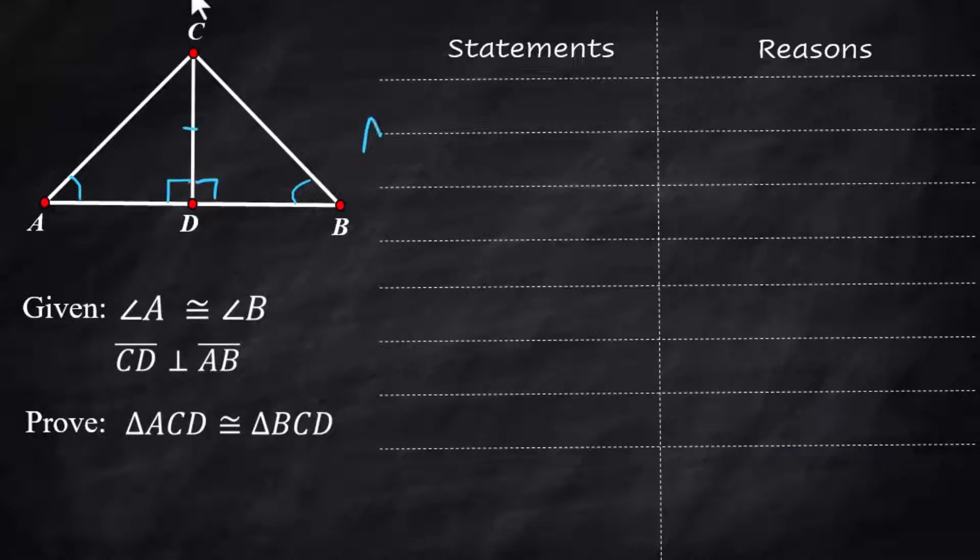Angle A is congruent to angle B, and that is given. So I've got one angle already set up. Now to get at the other angle, which are the two 90-degree ones, this is going to take a couple of steps. We start with CD is perpendicular to AB. That's given.